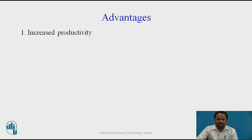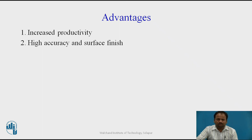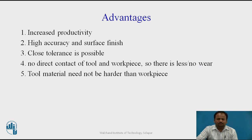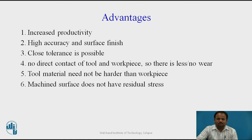Some advantages of unconventional machining processes: we can increase productivity; we get high accuracy and surface finish — good surface finish up to 2 microns; close tolerance is possible because the gap between the tool and the workpiece is maintained and there is no vibration to the workpiece; there is no direct contact of tool and workpiece, so there is no wearing of the tool; tool material need not be harder than the workpiece; machined surface does not have residual stress; and tool life is more since there is no wear.